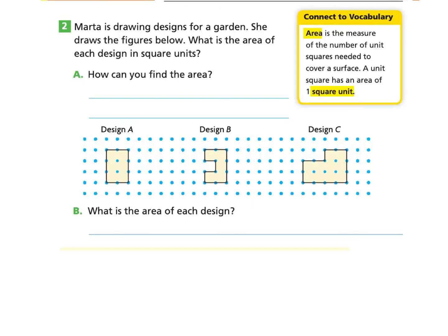When you're ready, turn the page. We are on the next page, page 37, looking at question number two. We'll be highlighting and looking for important information as we go through the questions. Marta is drawing designs for a garden. She draws the figures below. What is the area of each design in square units? Question A says: how can you find the area? And up here is a great reminder that area is the number of unit squares needed to cover a surface, and a unit square has an area of one square unit.